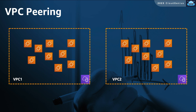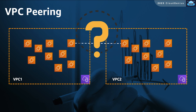Imagine a scenario where you have two VPCs, and each one of them has a set of resources launched in it. Based on what has been discussed in the previous slide, what do you think would happen if a resource in VPC1 tries to communicate with another resource on VPC2? Would this traffic be allowed?